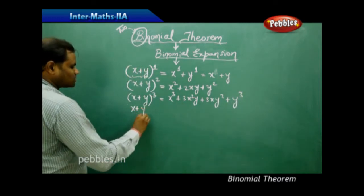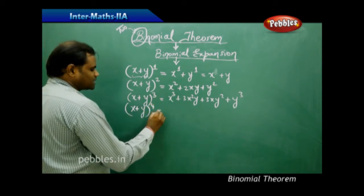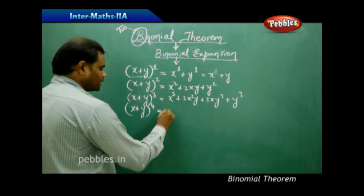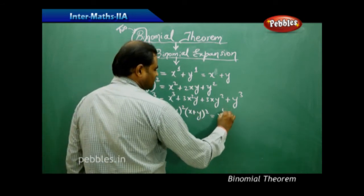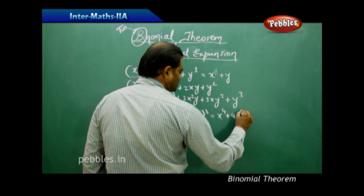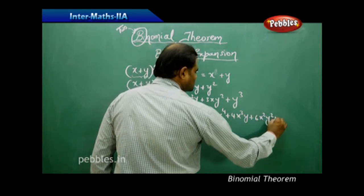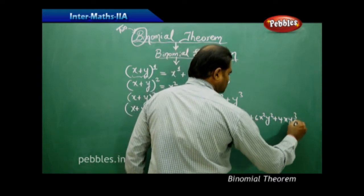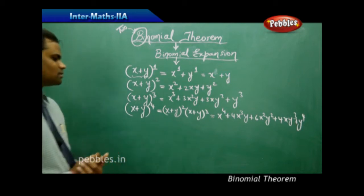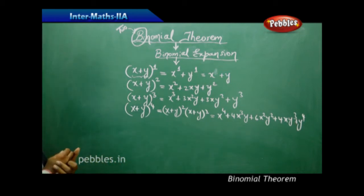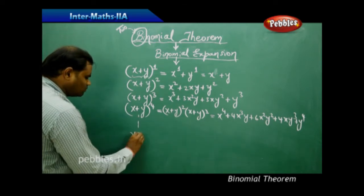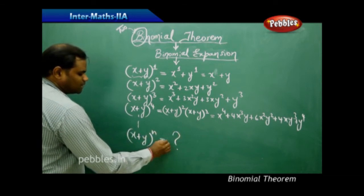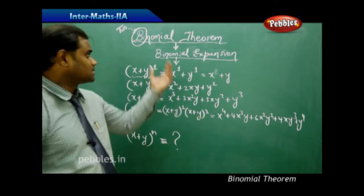When I raise this to power 4, expanding by taking (x+y)² × (x+y)², I get x⁴ + 4x³y + 6x²y² + 4xy³ + y⁴. In each of these cases I find that there are various properties connected with the expansions, and what happens for general n is the big question we are going to discuss as the binomial theorem.